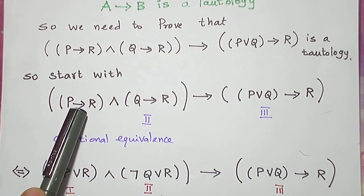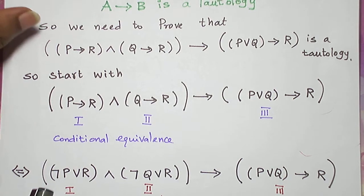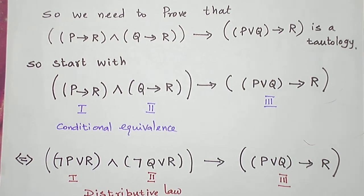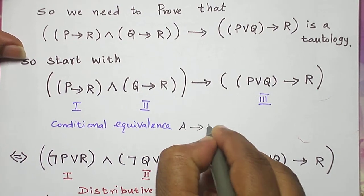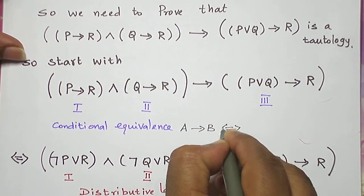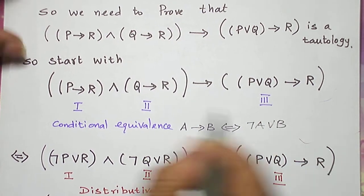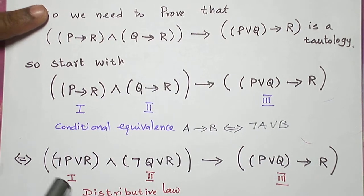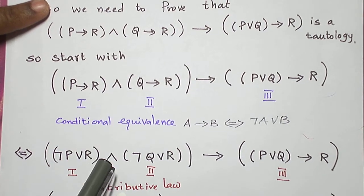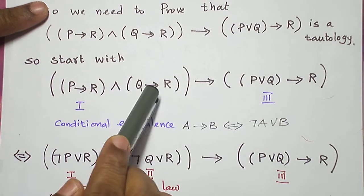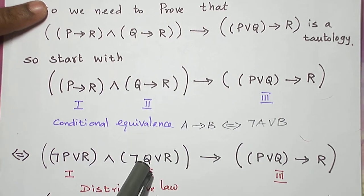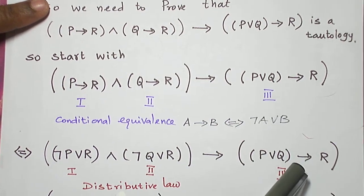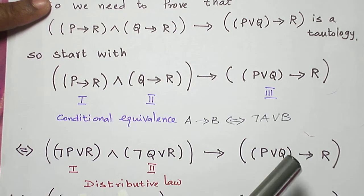Now let me replace the conditional connective using the conditional equivalence: A conditional B is equivalent to negation A or B. So I get negation P or R for the first part, and applying the same, negation Q or R for the second part. The right-hand side is not going to be disturbed at present.